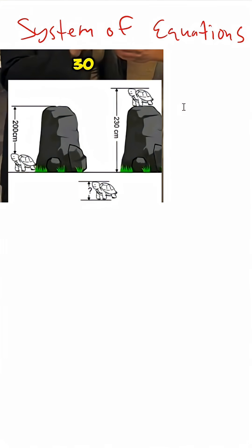So essentially what we're going to do is create two linear equations with variables to figure out the height of the turtle. So let's assign our variables. I'm going to say that the height of the turtle, if we just look at the turtle here, I'm going to call it X. Let's make it simple.